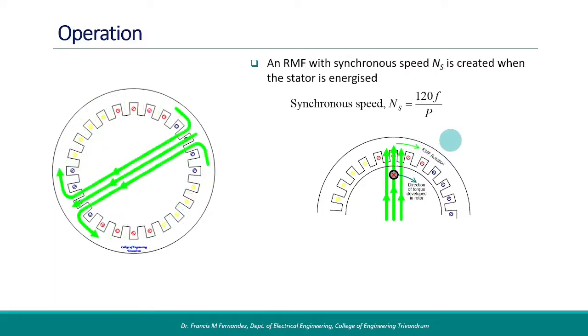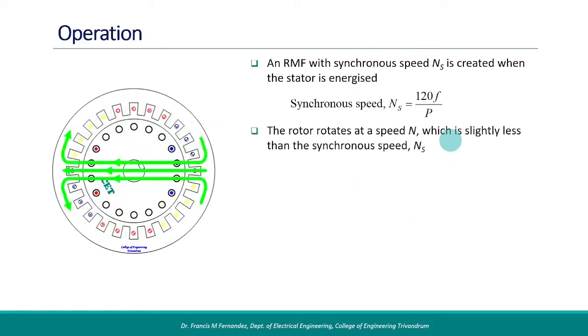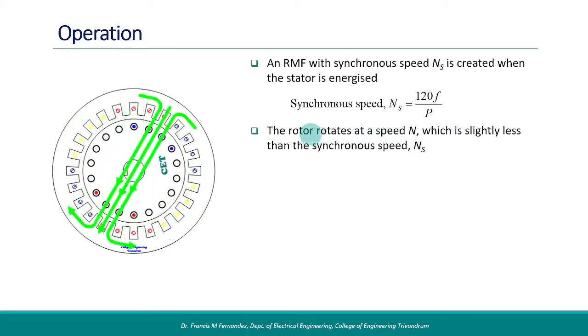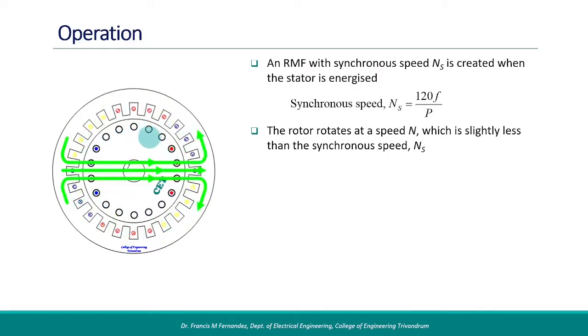The rotor rotates at a speed N, which is slightly less than that of the RMF. The slower rotation of rotor with respect to the RMF is an essential requirement for generation of torque.